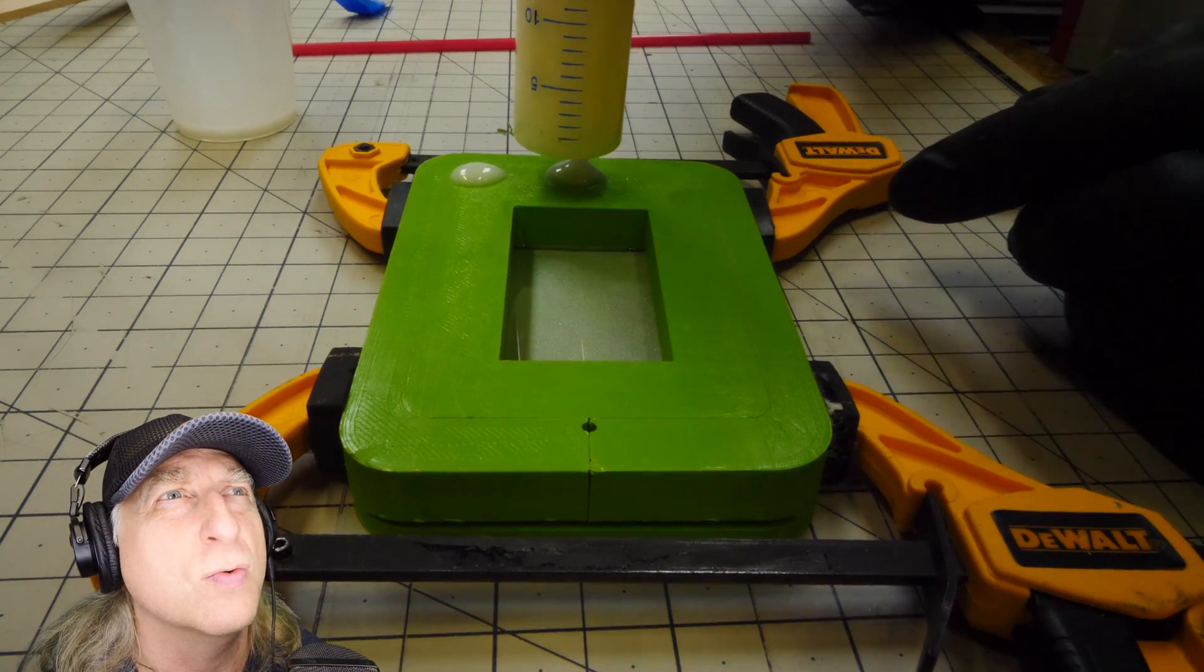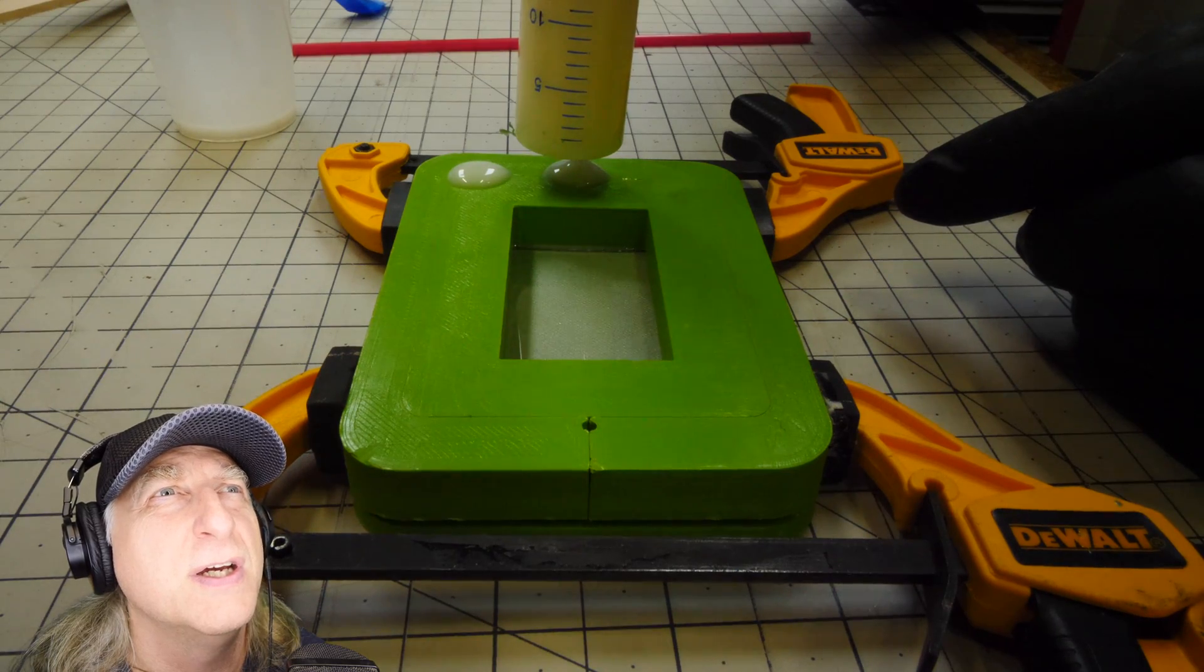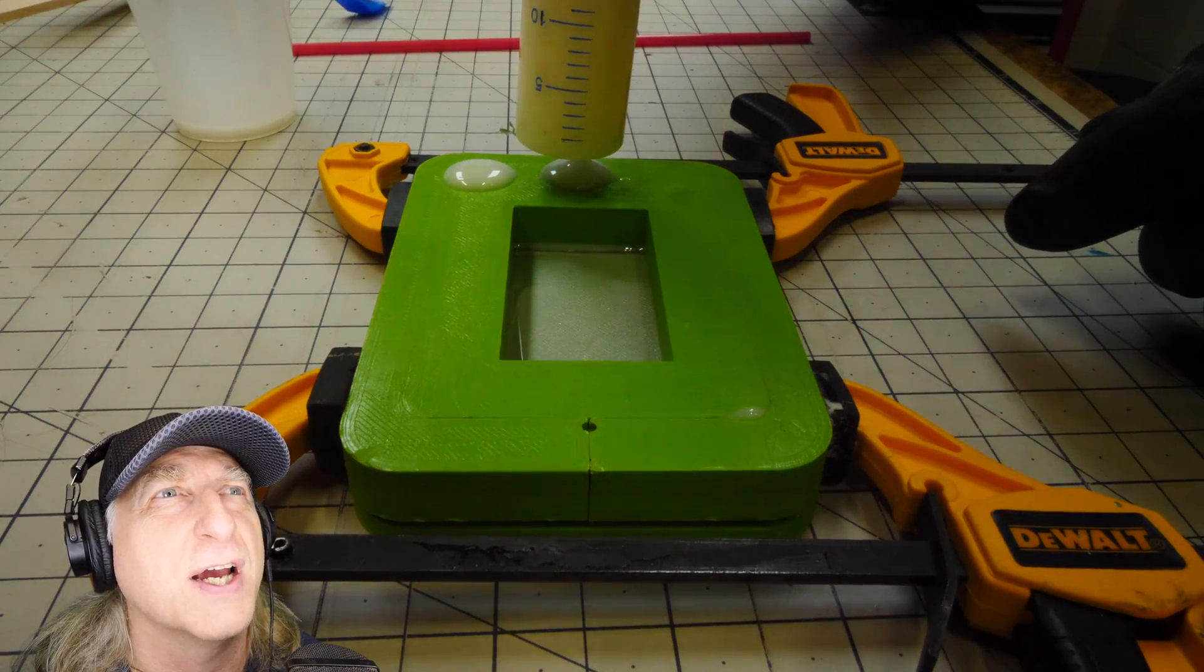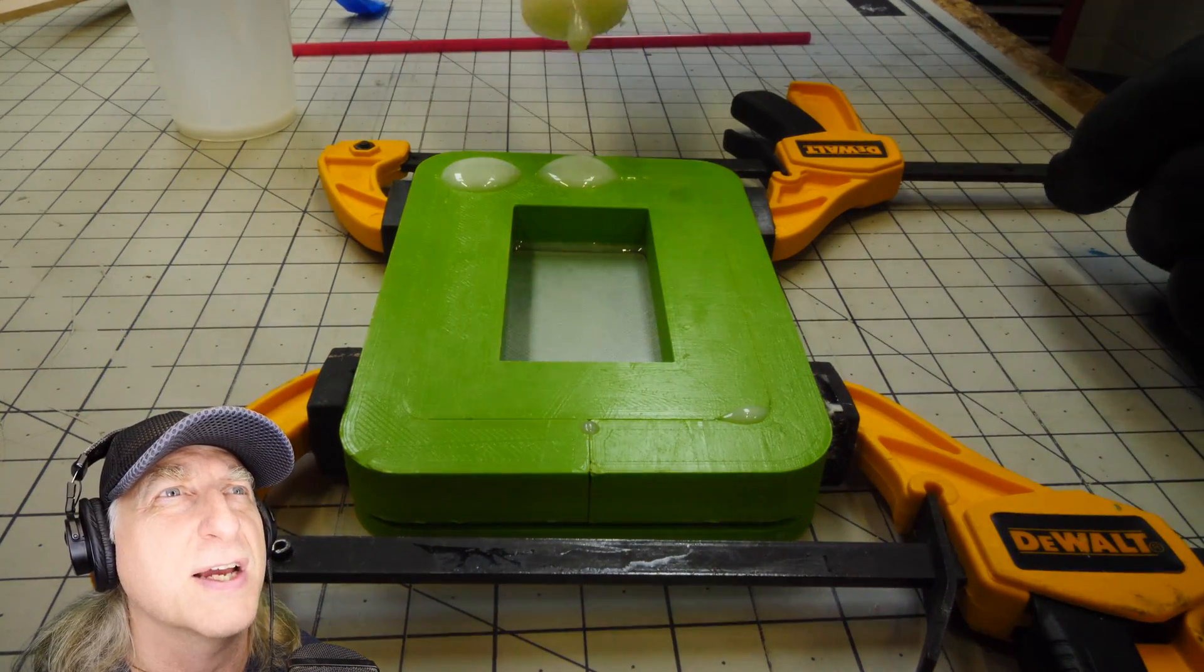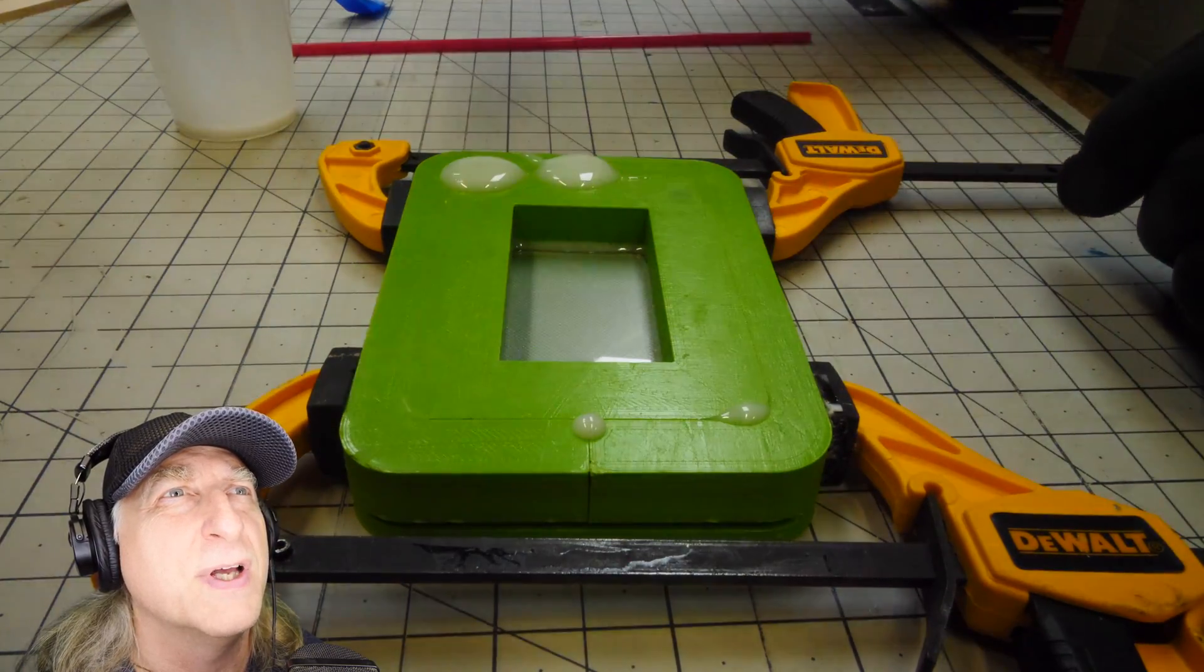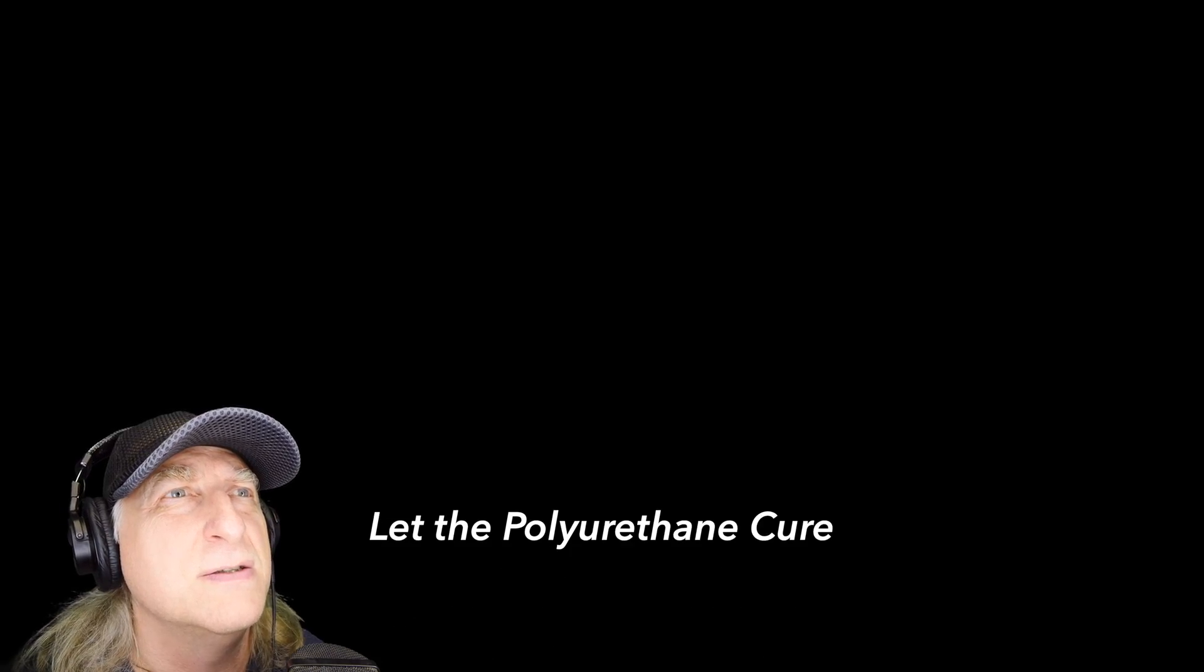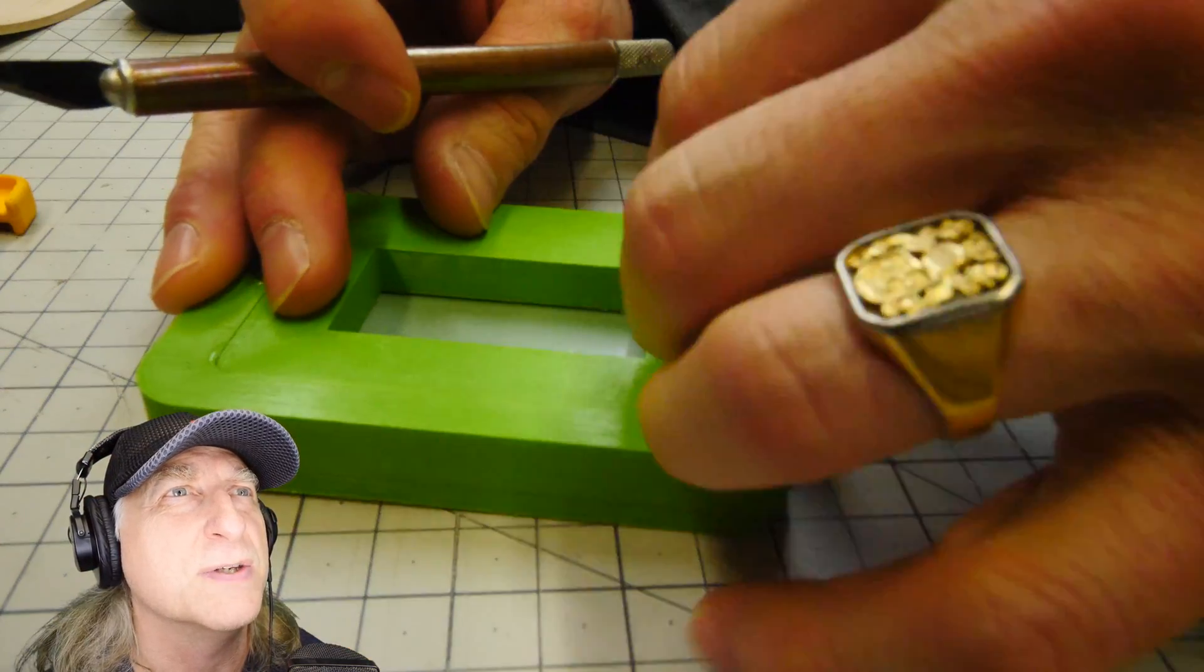I'm degassing, doing the final degas right in the syringe, and then we're going to inject into one of the holes. You'll see it come out the other side here in just a second. And then we'll let that harden and we can demold it.